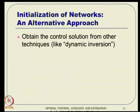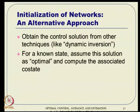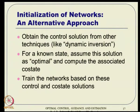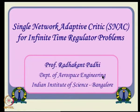An alternative initialization uses a control solution from other techniques such as dynamic inversion; for a known state, assume that solution is already optimal and compute the associated costate. However, this requires a pseudo-inverse when control and costate dimensions differ, which is problematic for large dimensional discrepancies. For compatible dimensions, such as three states and two controls, it is feasible and avoids linearization. Anyway, the idea of single network adaptive critique arises because adaptive critique requires two networks and cycle training.